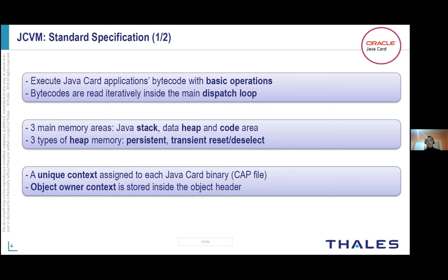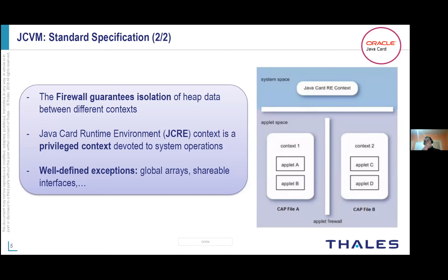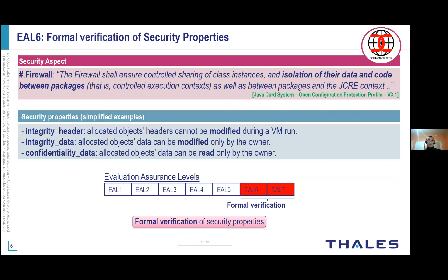A unique context is assigned to each Java card binary, and each manipulated object during the execution is owned by a unique context that is encoded in the header of the object. The Java card virtual machine ensures secure sharing of data between the different applets during execution, thanks to this firewall mechanism that mainly ensures that accesses between contexts are denied except in well-defined situations that will not break this isolation property of data between contexts.